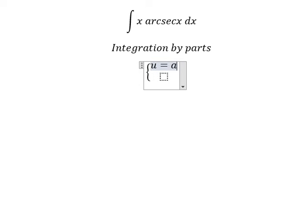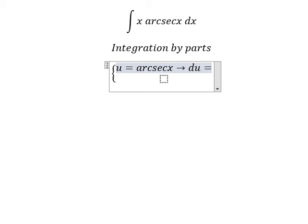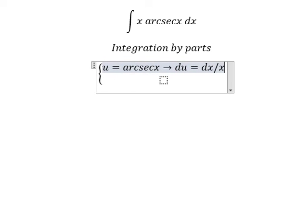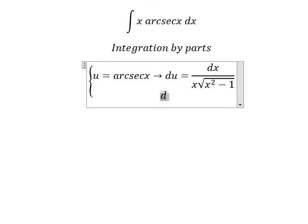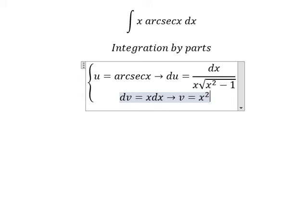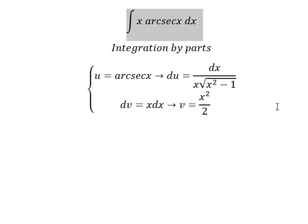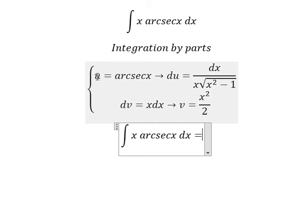So if I do the first derivative of u, I get du equals dx over x times the square root of x squared minus 1. For dv, I will choose x dx, and the integration of that gives v equals x squared over 2.